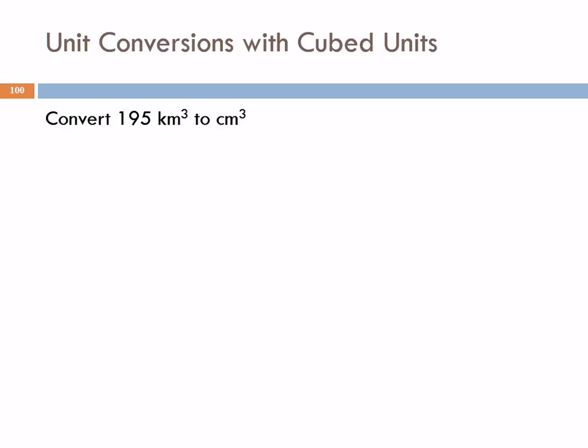Here's an example of a unit conversion with cubed units. This is going to illustrate something else as well that I failed to cover when we have two prefixes in our metric conversions. So we'll kill two birds with one stone here.